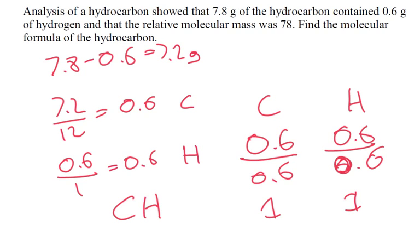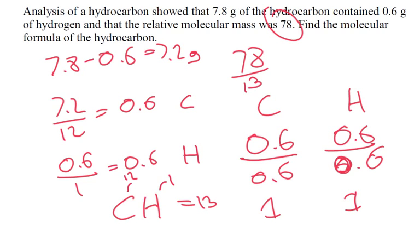The molecular mass is 78. So 12 for carbon plus 1 for hydrogen = 13 per empirical unit. 78 divided by 13 = 6. So the molecular formula is C6H6.